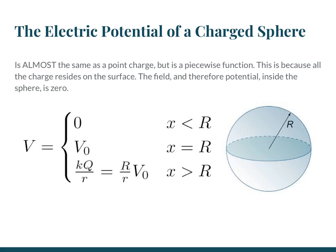The first one we're going to look at is the electric potential of a charged sphere, which is actually super similar to a point charge. The only difference between this and a point charge is really that this has a piecewise function, and we'll talk about that right now.